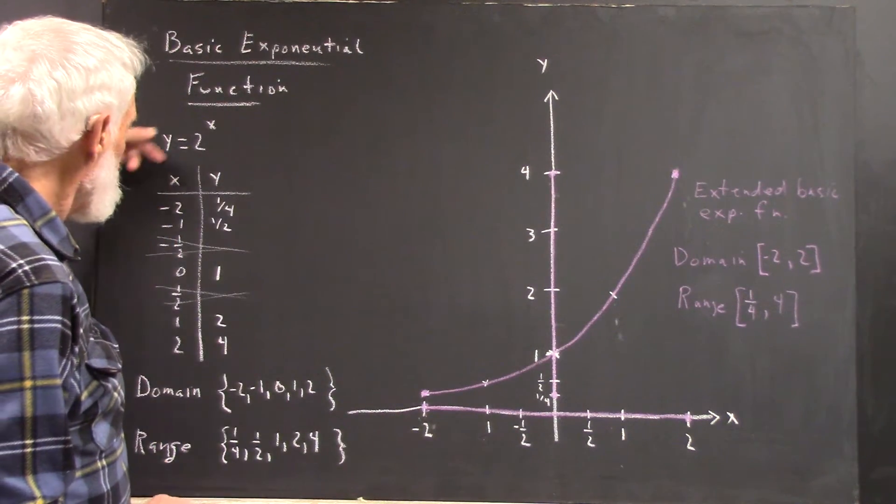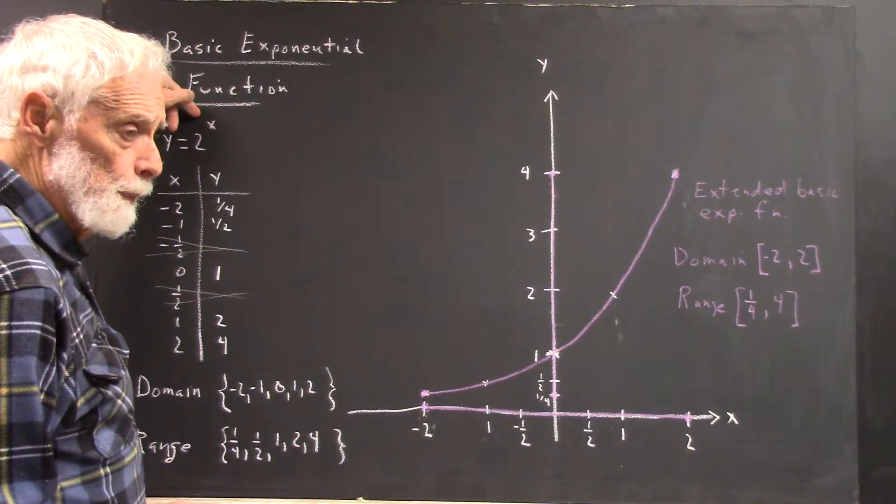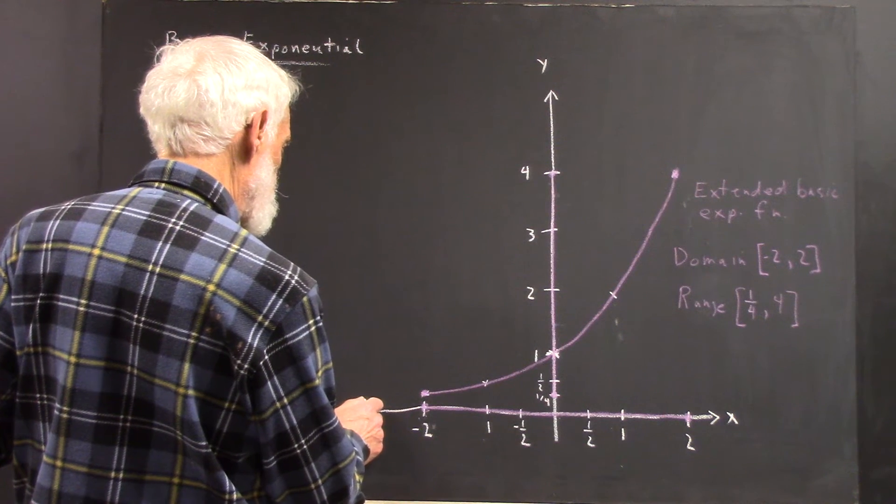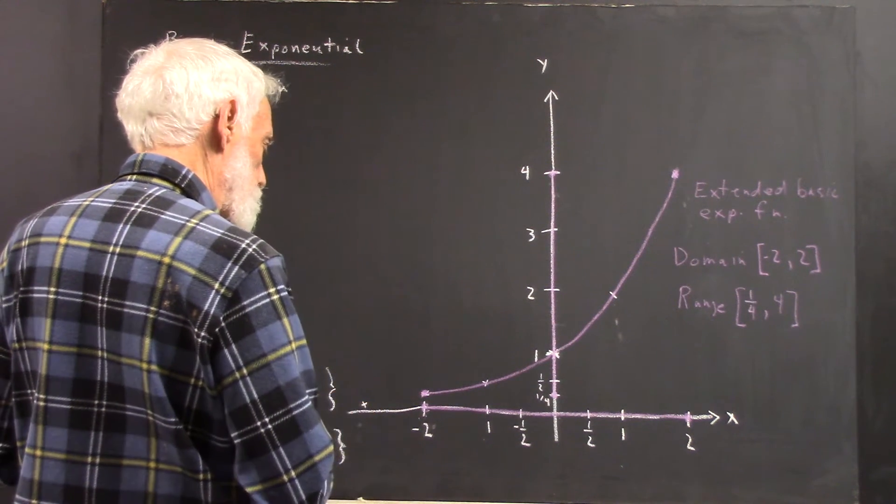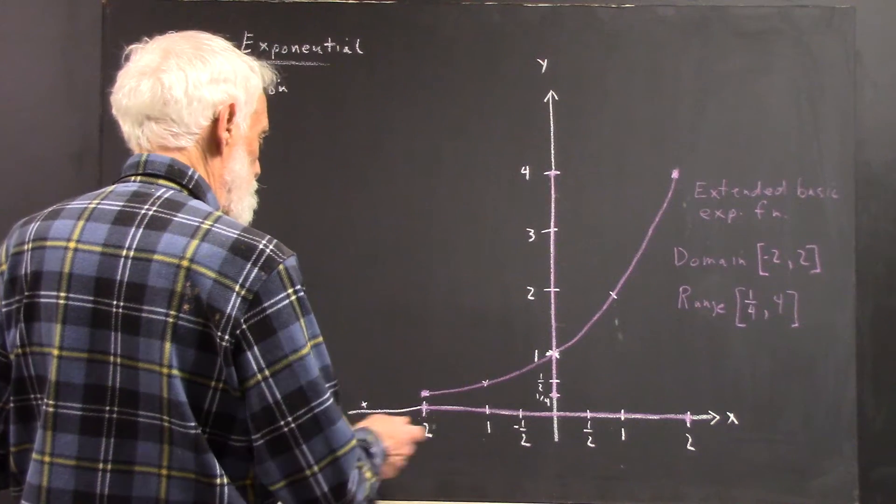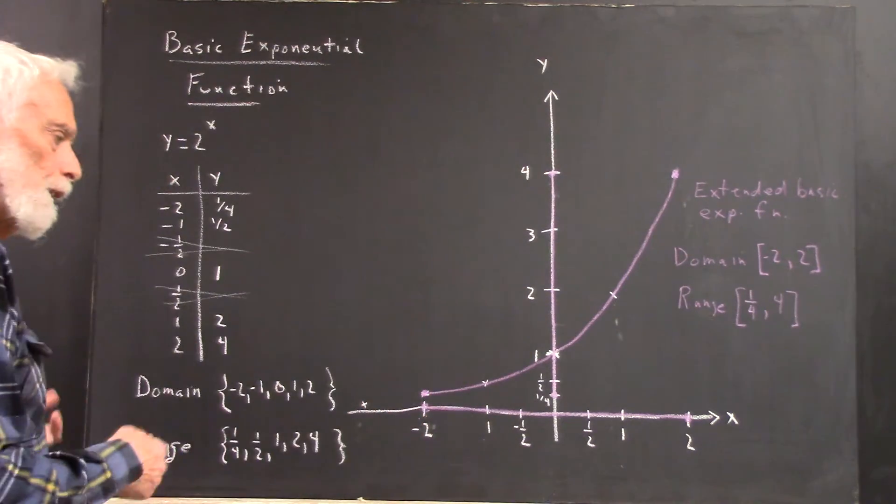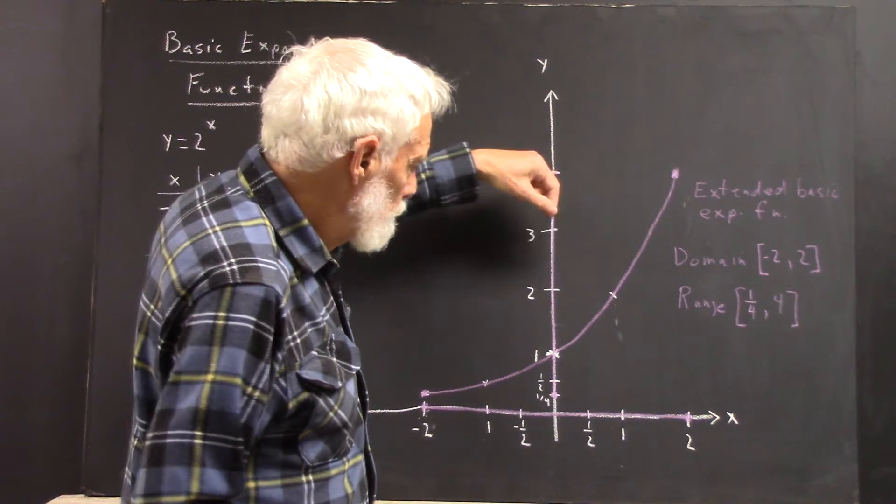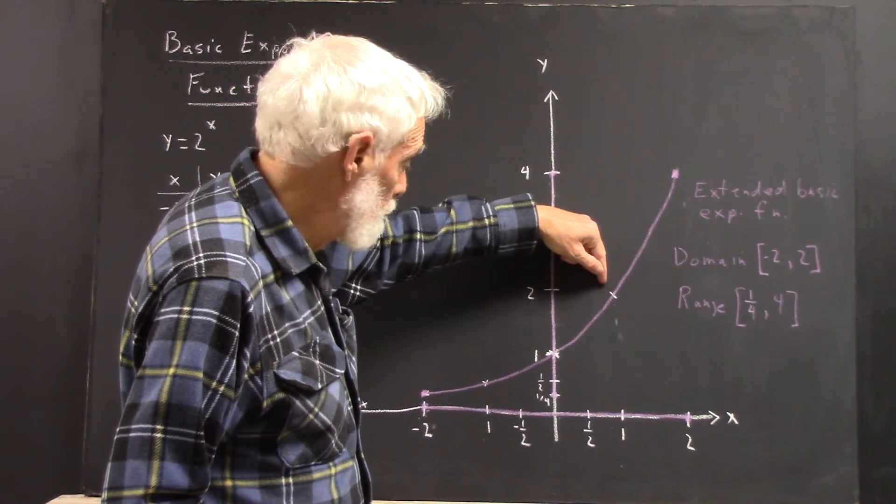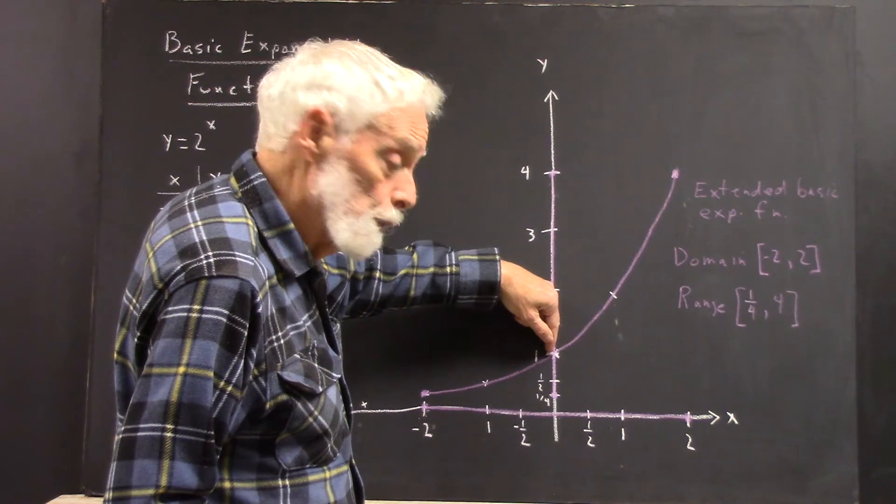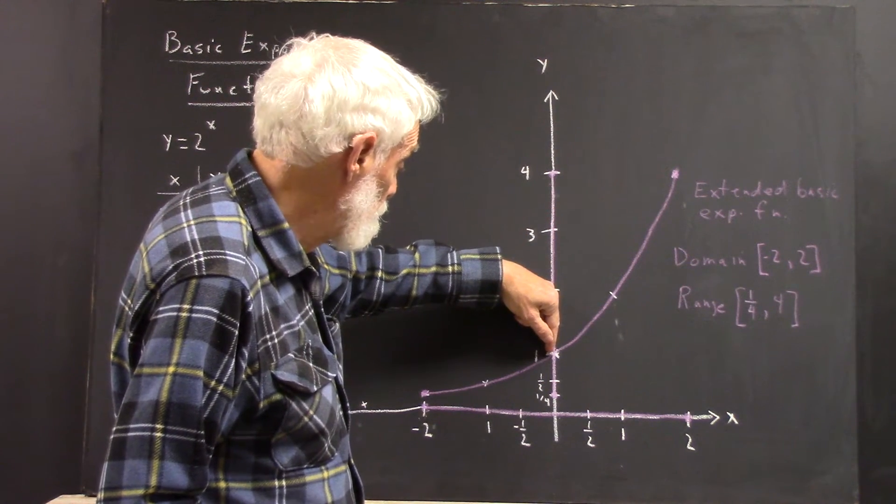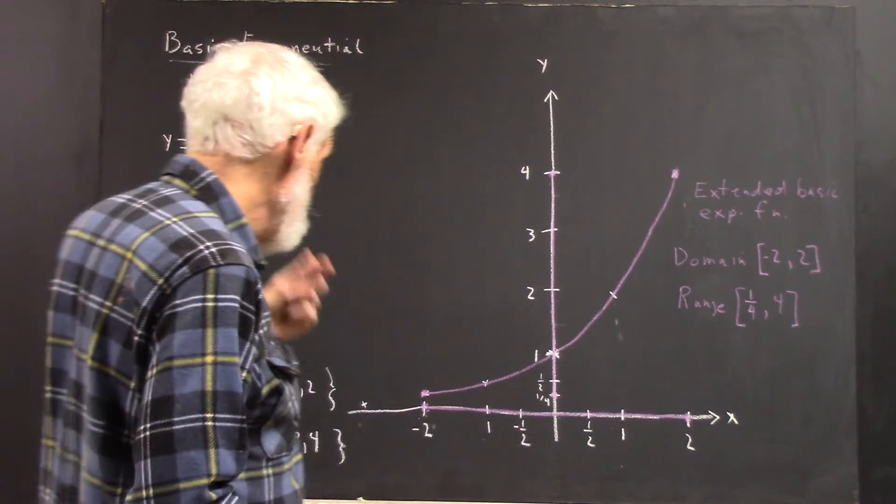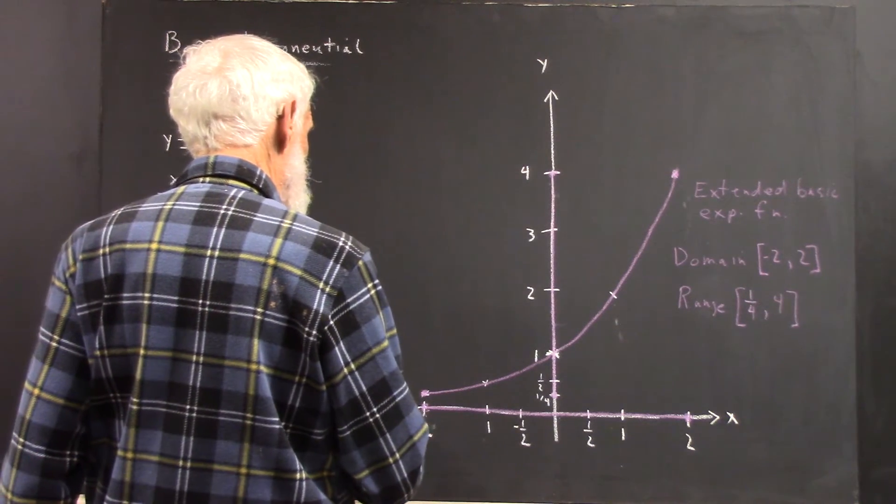If I was to go to negative 3, I would have 2 to the negative 3, which would be 1 eighth. So, we're going to get twice as close to the x axis if we just go to here. And every time we go over another unit, it turns out we get twice as close. We're going to continue getting twice as close.